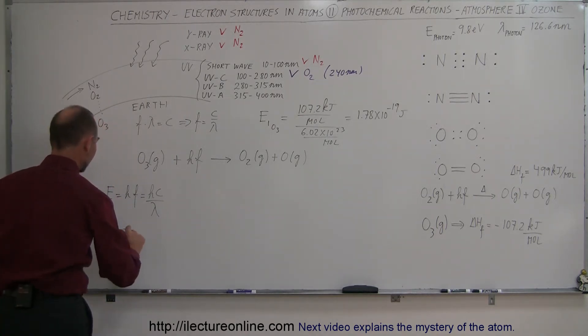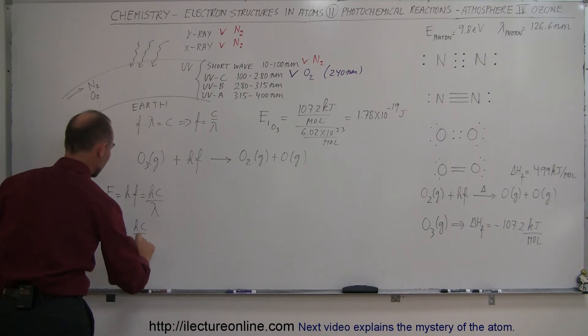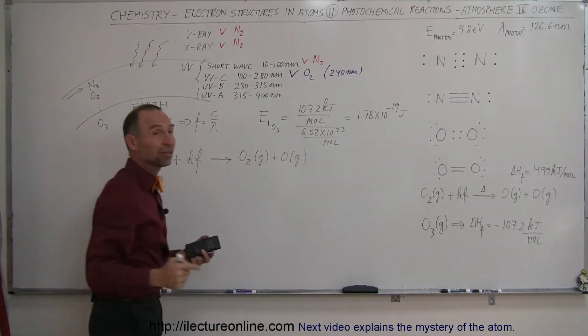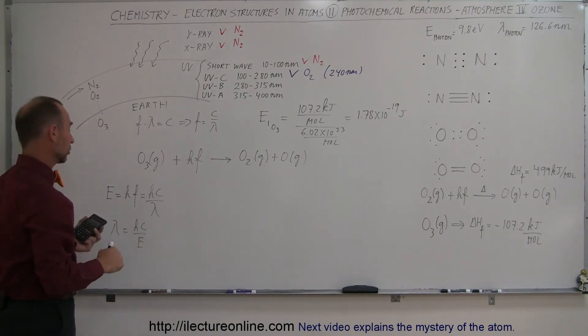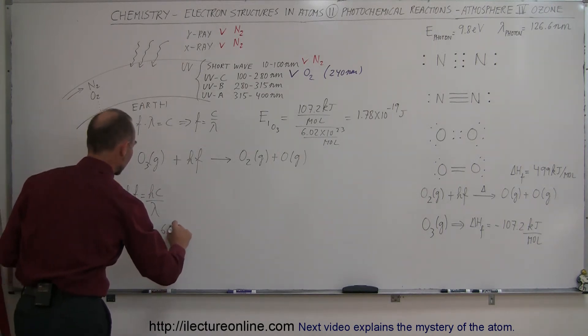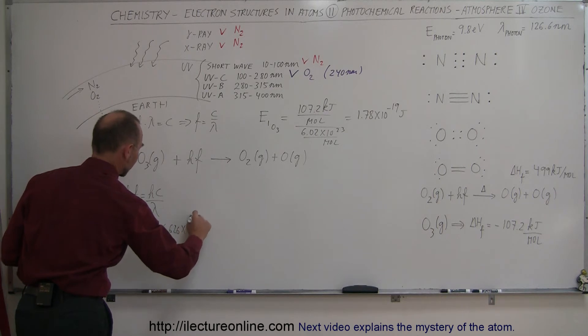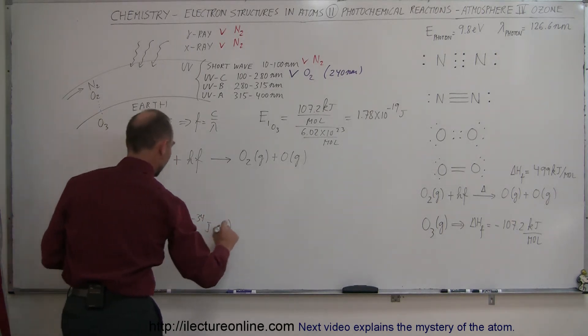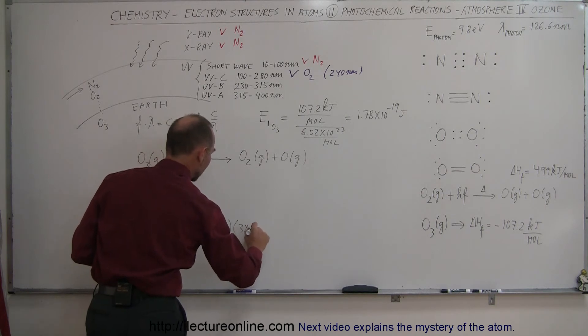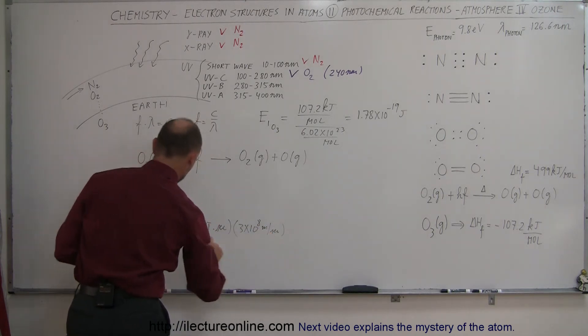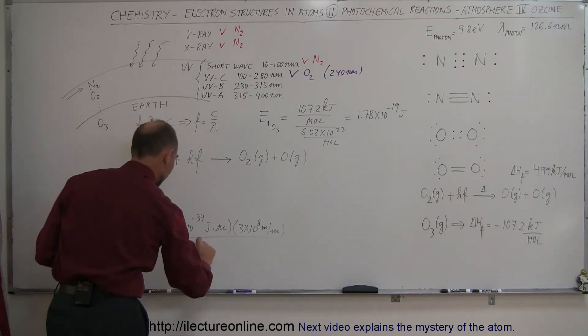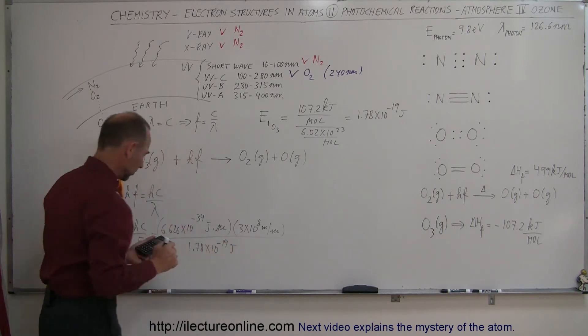We can find the wavelength to be equal to hc over the energy of the photon, which we just calculated. This equals 6.626 times 10 to the minus 34 joules times seconds, multiplied by the speed of light, 3 times 10 to the 8 meters per second, divided by the energy of a single molecule, 1.78 times 10 to the minus 19 joules.